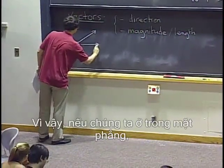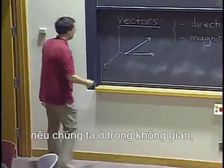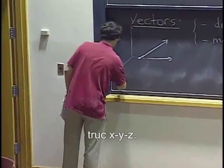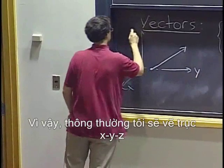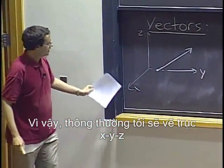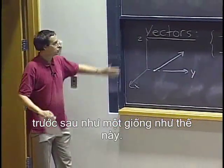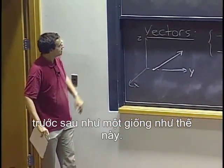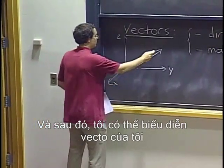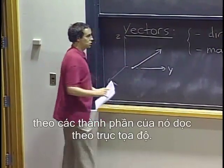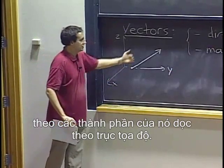So, if we are in the plane we use x, y axes, and if we are in space we use x, y, z axes. Usually I will try to draw my x, y, z axes consistently to look like this. And then I can represent my vector in terms of its components along the coordinate axes.